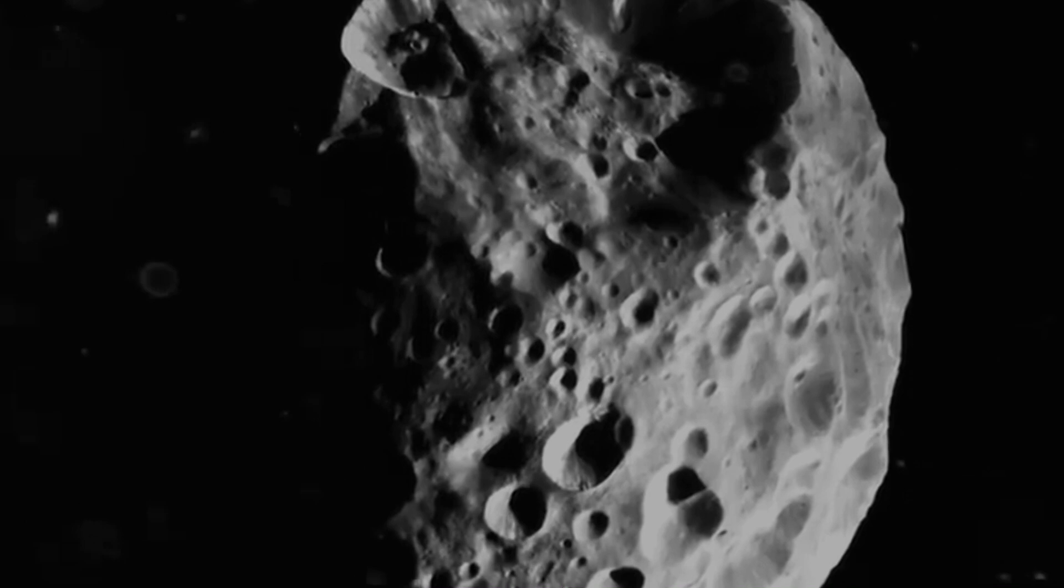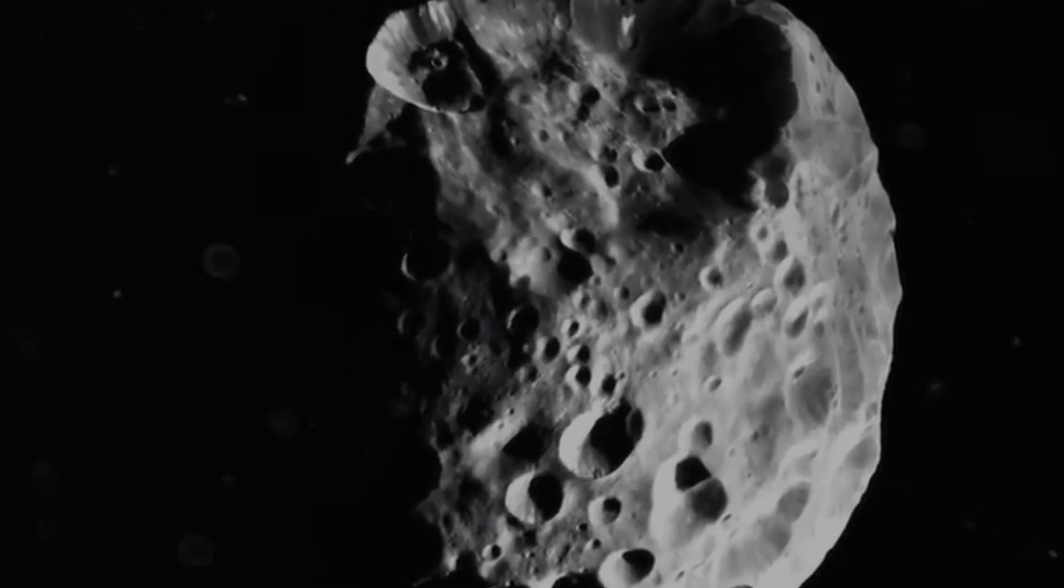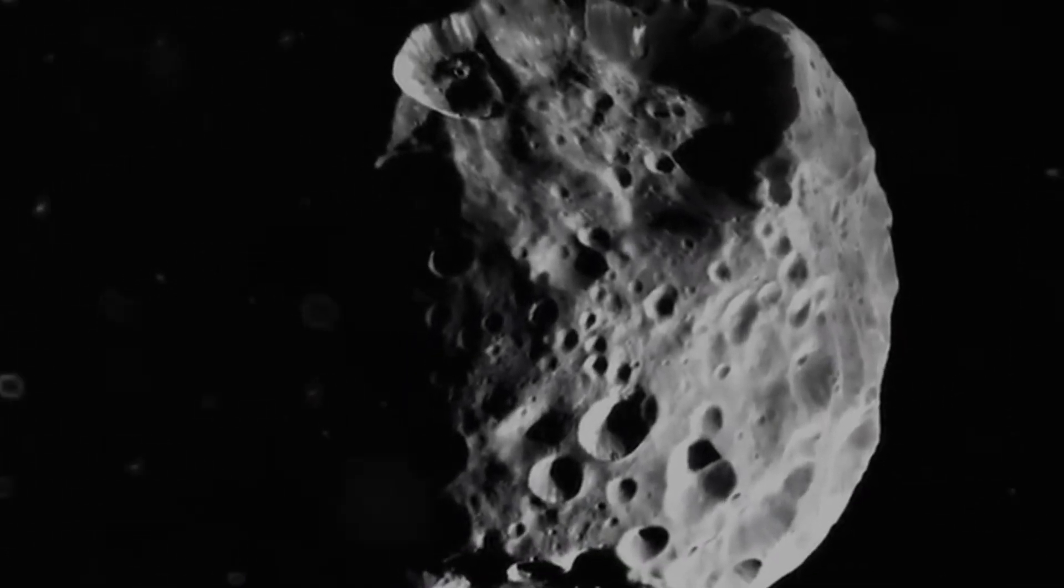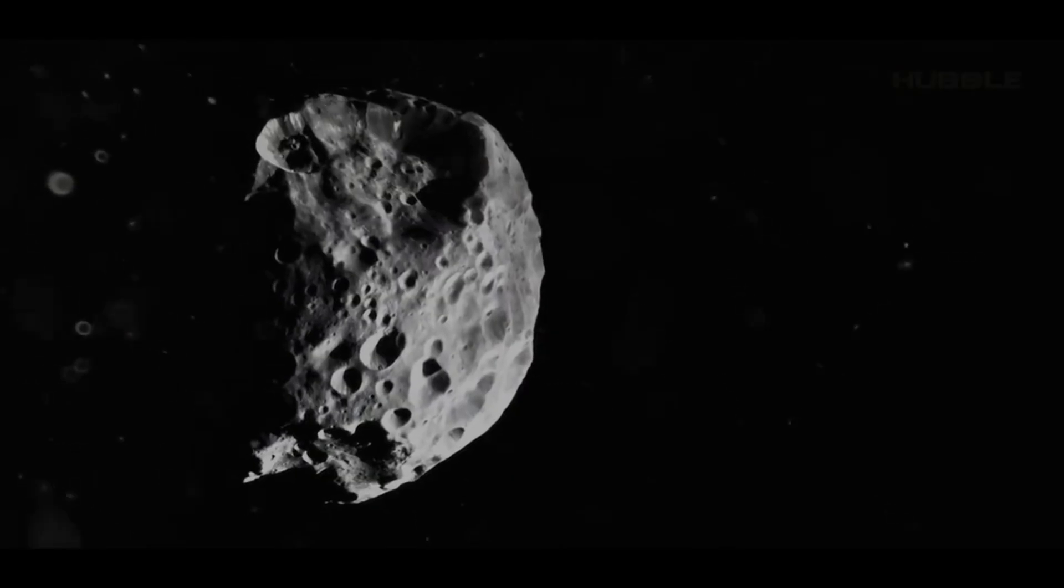It is known for sure that the surface of Iapetus, where the dark part is located, is covered with carbon and a layer of dust of about 30 centimeters. It is highly probable that Iapetus contains organic compounds similar to those on the surface of comets.